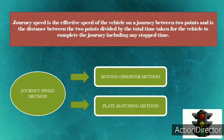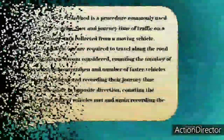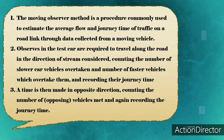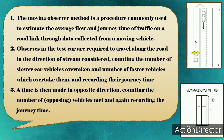There are two methods of journey speed. The first method is the moving observer method, and the second one is the plate matching method. For our traffic study, we chose the moving observer method. The moving observer method is the procedure commonly used to estimate the average flow and journey time of traffic on a road link through data collected from a moving vehicle.